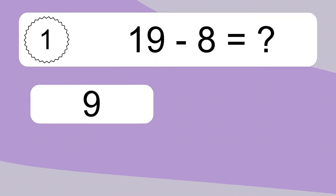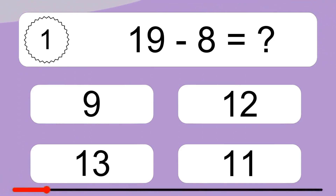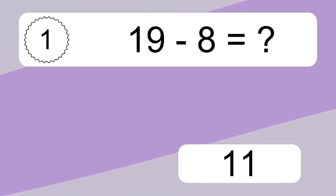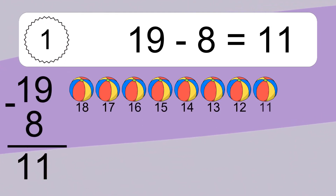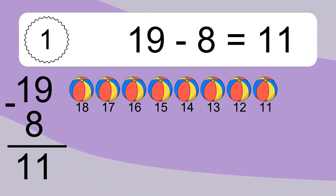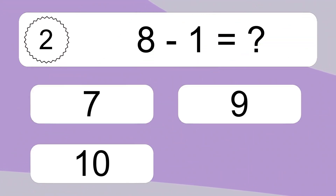19 minus 8 equals what? 19 minus 8 equals 11. Let's count it: 18, 17, 16, 15, 14, 13, 12, 11.